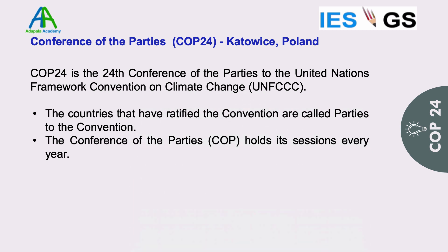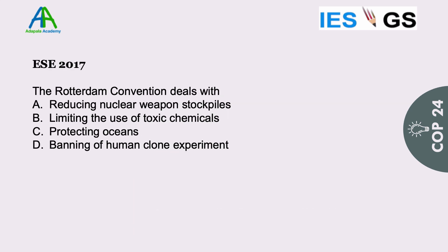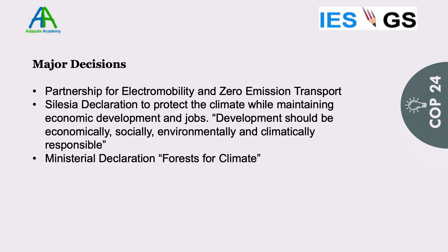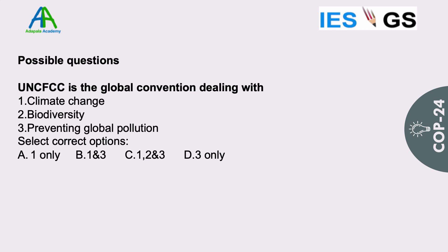Parties meet once a year and this was the 24th conference. In 2017 there was a direct question on the Rotterdam Convention. Major decisions at COP 24 included: a partnership for electric mobility and zero-emission transport to reduce emissions from the transport sector; the Silesia Declaration stating development should be economically, socially, environmentally, and climatically responsible; and a ministerial declaration on forests for climate, since forests are a major carbon sink that removes CO2 from the atmosphere. A possible exam question could be a direct question on UNFCCC.